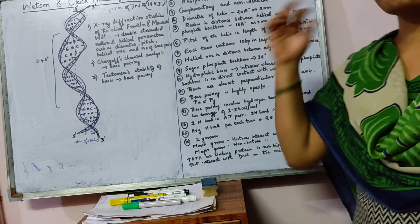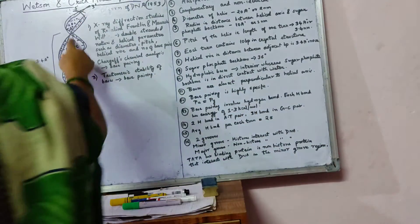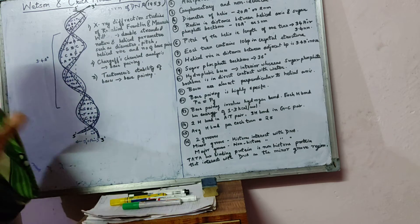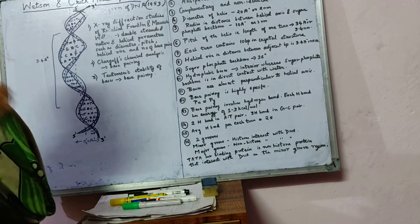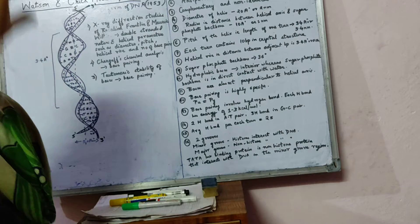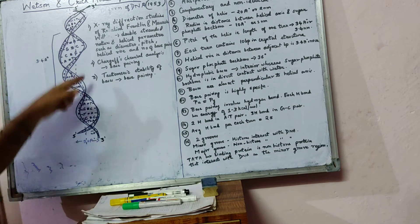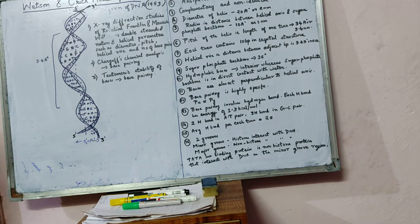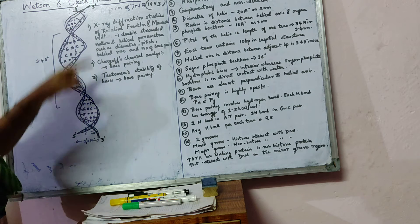The salient features of the double helix: first, the two strands of the double helix are right-handed, meaning the double helix runs in the right-hand direction. Second, the two strands are antiparallel.